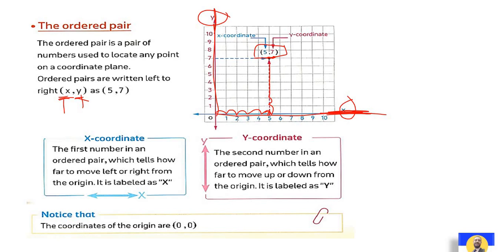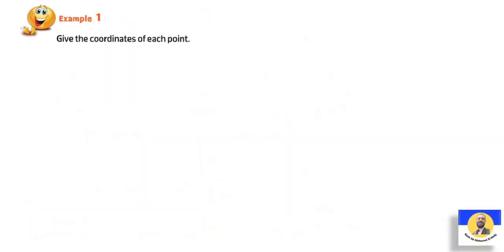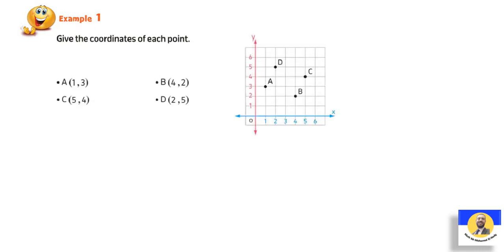The coordinates of the origin always equal (0, 0). For example: give the coordinates of each point. Point A — the x-number is one and the y-number is three, so we call it A (1, 3). Point B comes from x at four and y at two, so it's called (4, 2).